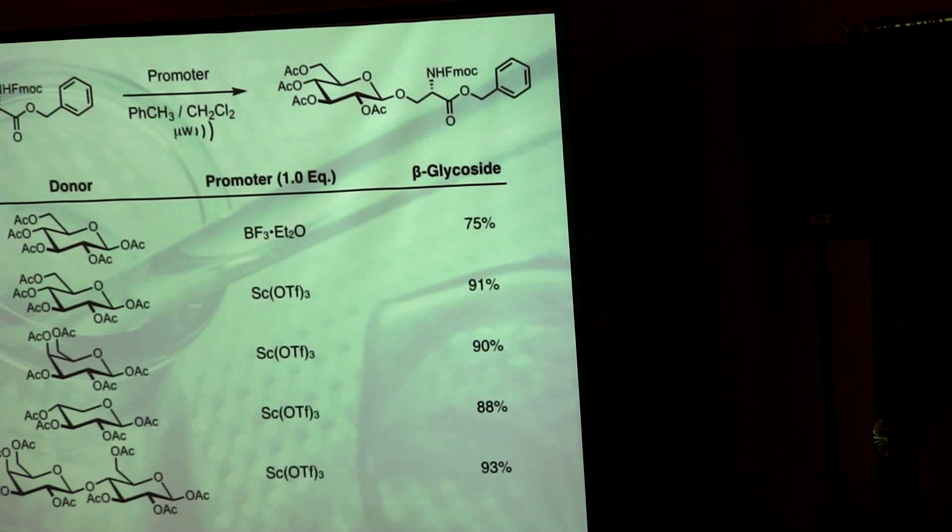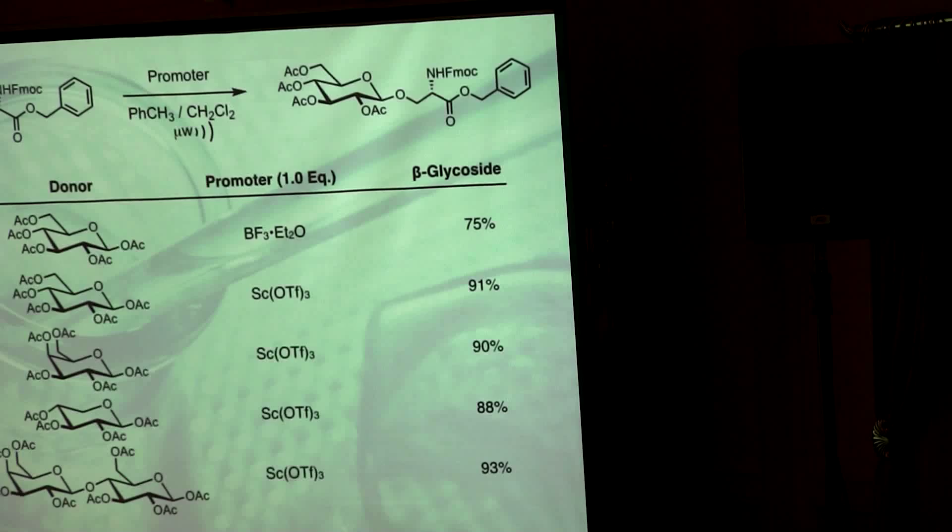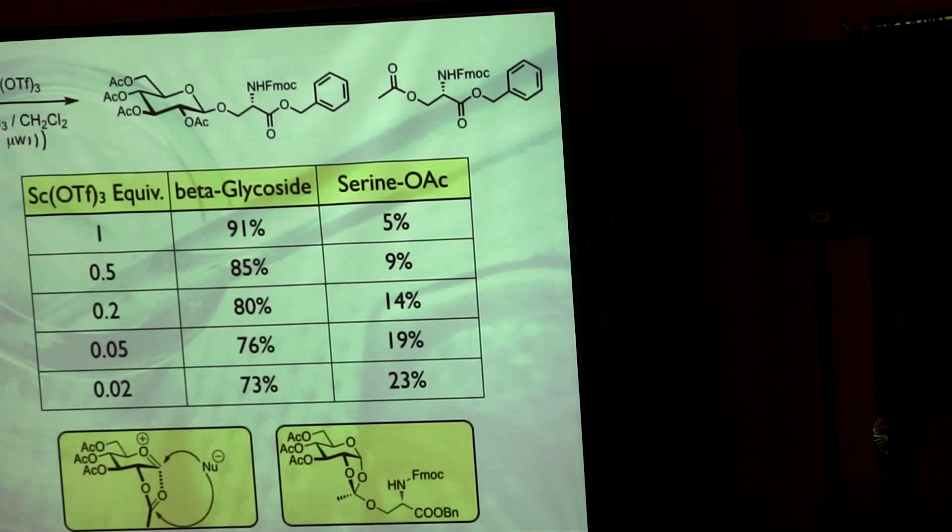If we took this model acceptor here, then we could see we could get reasonable yields of this with scandium trifluoride with different peracetates here—glucose, galactose, xylose, or lactose—very decent yields. But everything is one to one here: one equivalent of acceptor, one equivalent of donor, one equivalent of promoter. And this looked pretty good.